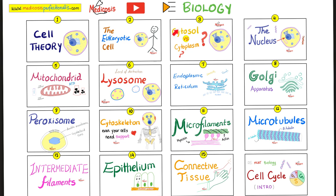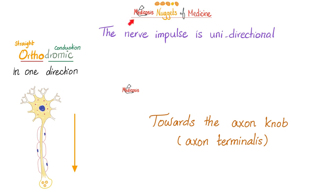This is my biology playlist, and today's video is number 35. The nerve impulse is unidirectional — it goes in one direction only. That direction is from the soma to the axon terminalis. We call this orthodromic. The opposite is known as antidromic, but antidromic is nonsense here. The actual correct answer is orthodromic — this is how the nerve impulse flows.